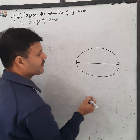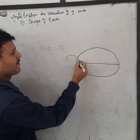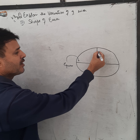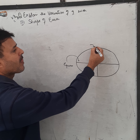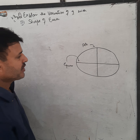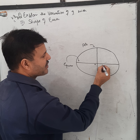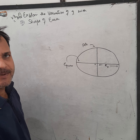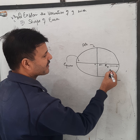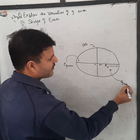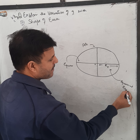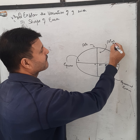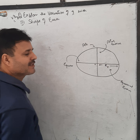This region we call the equator, and this is the pole. This is the equatorial radius, and this is the polar radius, Rp.